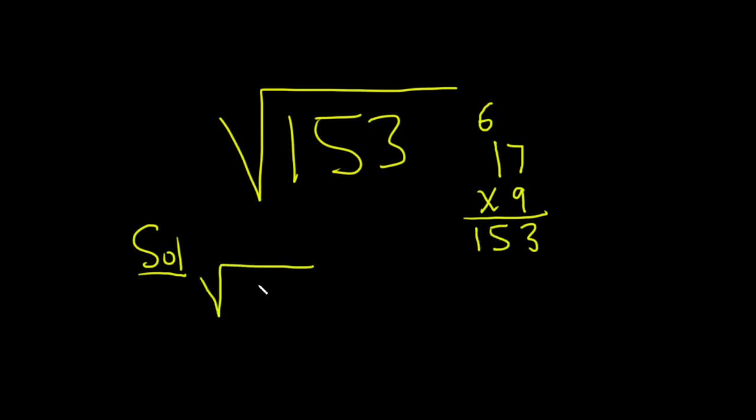So we have the square root of 153, and that's equal to the square root of 9 times 17.